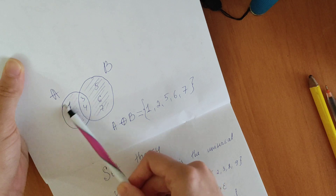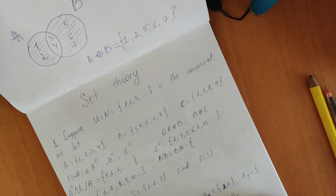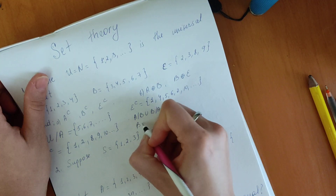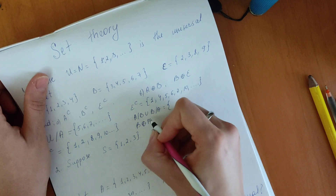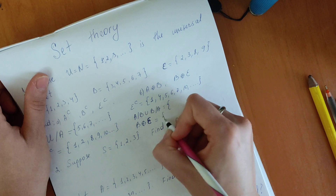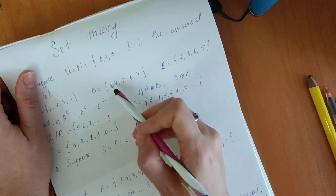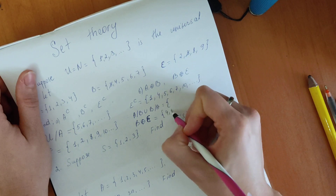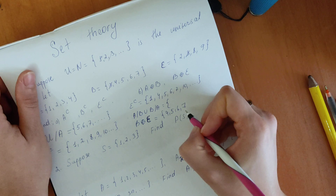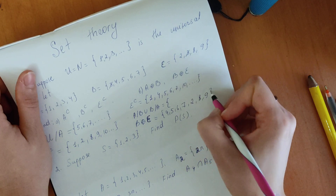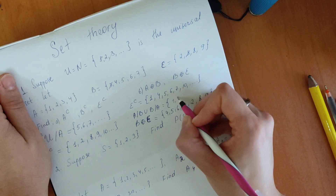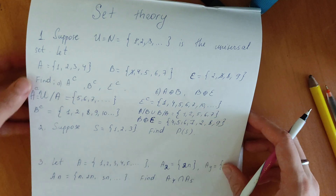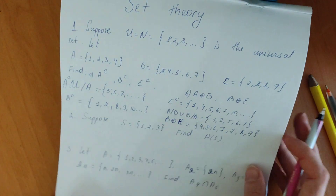Let's find the symmetric difference of B and E. The common element of B = {3, 4, 5, 6, 7} and E = {2, 3, 8, 9} is just {3}. So the symmetric difference is {4, 5, 6, 7, 2, 8, 9}. And the result for A△B was {1, 2, 5, 6, 7}.